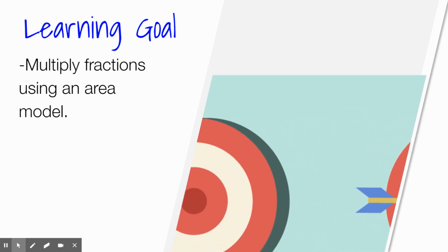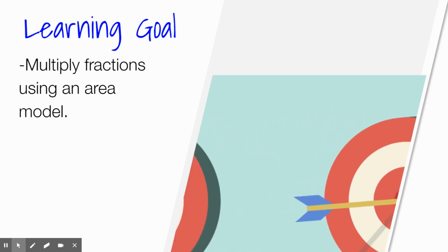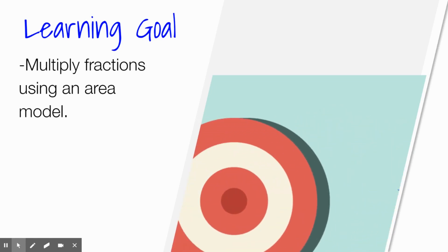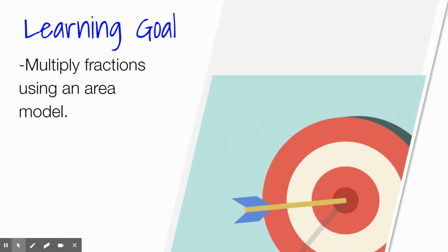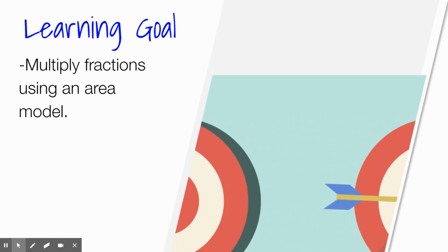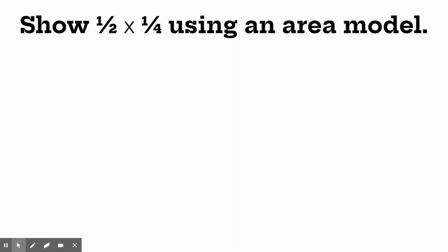No tricks up our sleeves here, just what we see is what we get. We're going to do two examples and then you'll have a couple of quiz questions to check how well you understand. Our first example is going to show one-half times one-fourth using an area model.